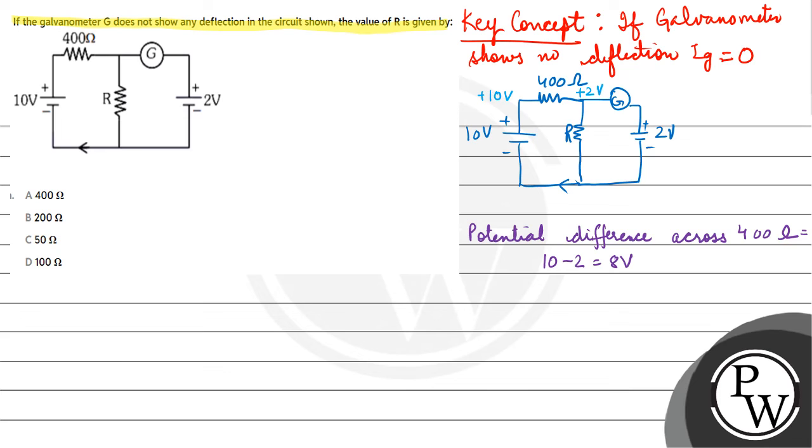I would be equal to V upon R. Potential difference is 8 and resistance is 400, so current comes out to be 1/50 A.